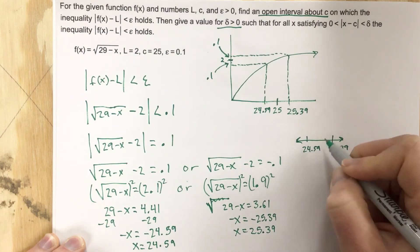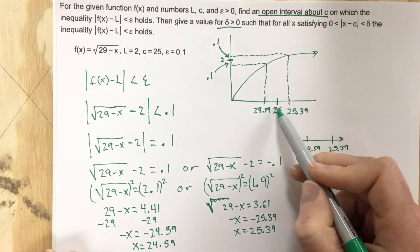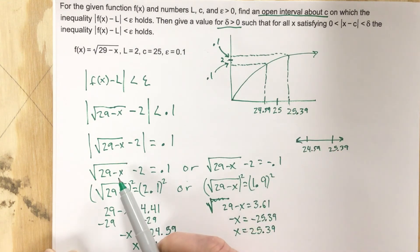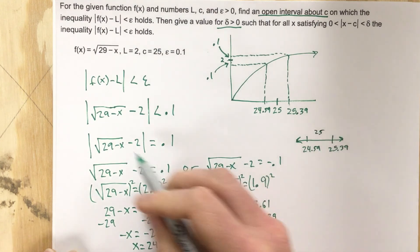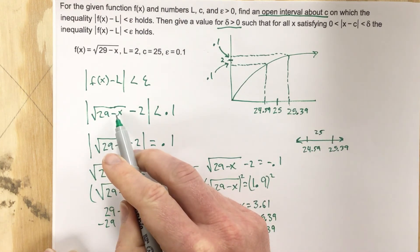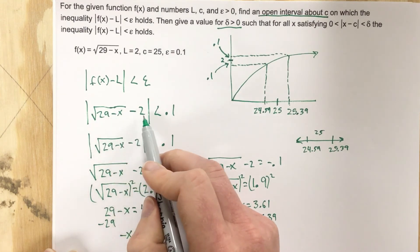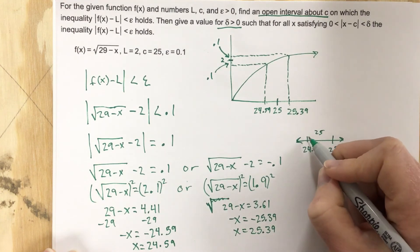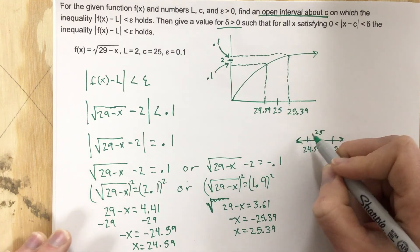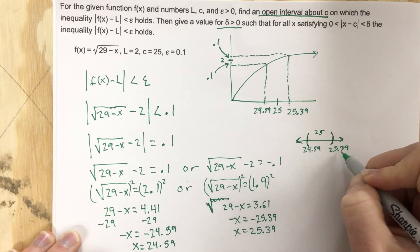and then we need to test numbers in the middle. But we already know if we take 25 and plug it into this function, which would be between them: 29 - 25 is 4, root of 4 is 2, 2 - 2 is 0, 0 is less than 0.1. So we know that the interval would go from 24.59 to 25.39.